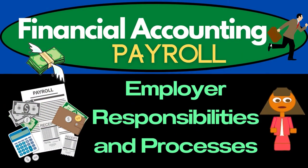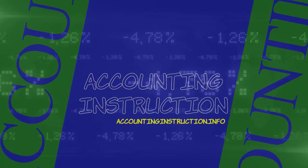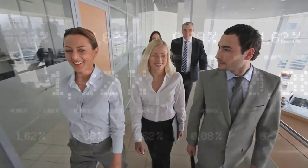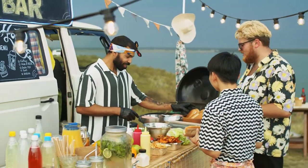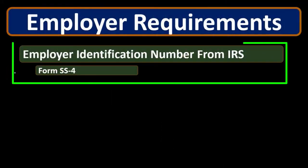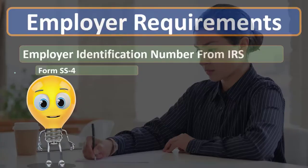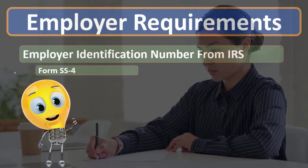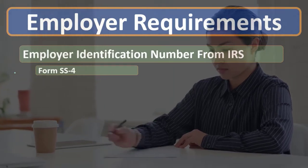In this presentation we will discuss employer responsibilities and processes related to payroll. One of the things that the employer will need to do — whether they are a corporation, a partnership, or even a sole proprietor — is to get an employer identification number from the IRS. That is done with Form SS-4. This employer identification number is needed when we process our tax documentation, and for processing federal payroll.